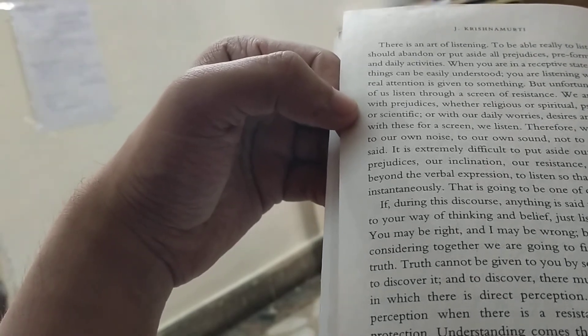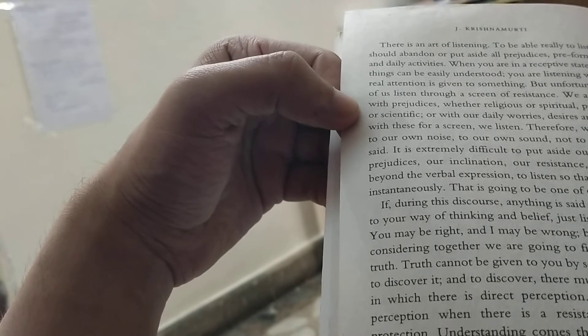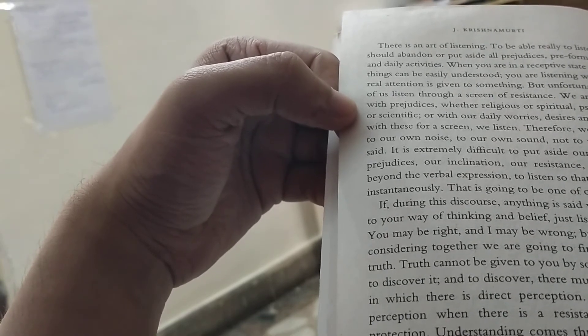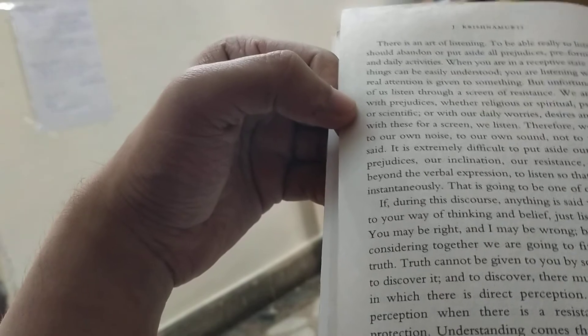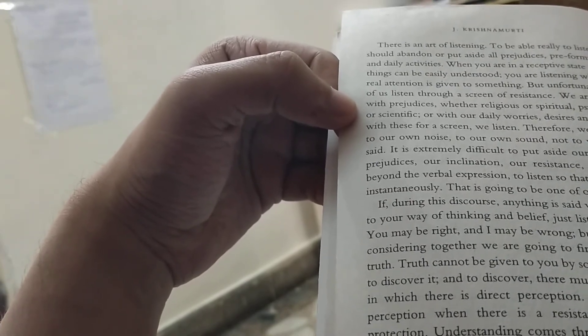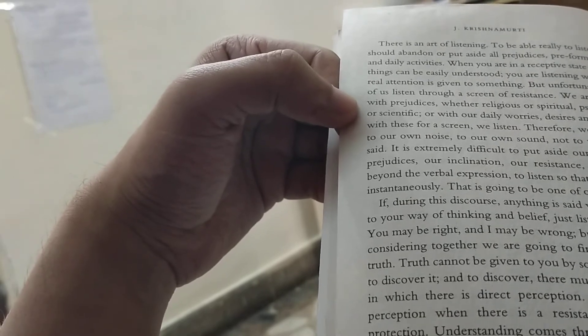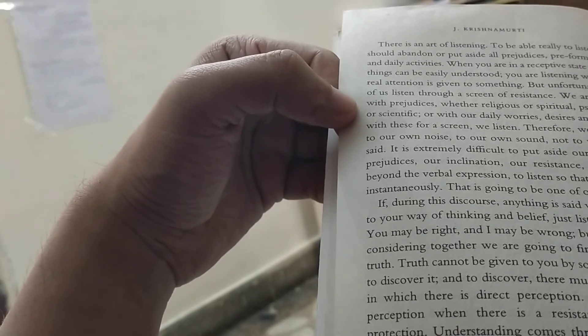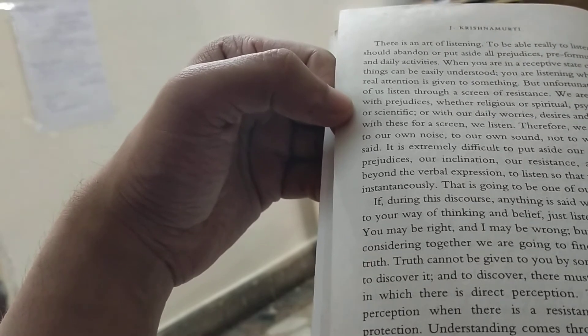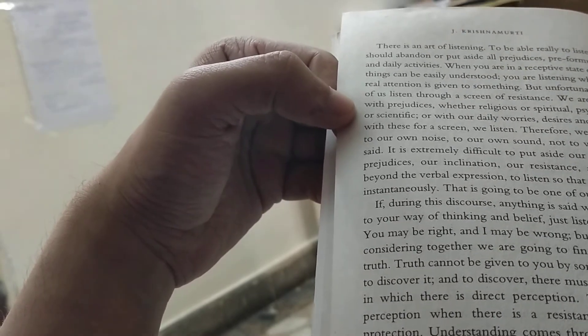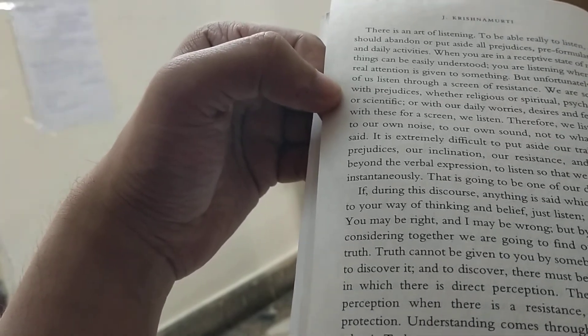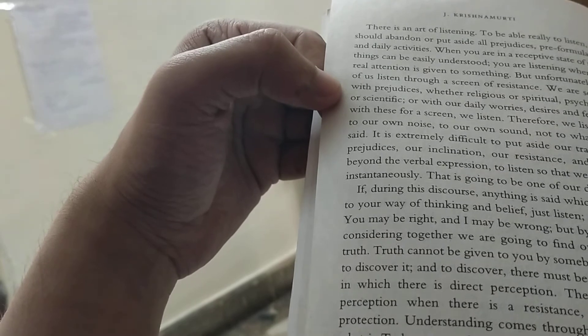Understanding comes through being aware of what is, to know exactly what is, the real, the actual, without interpreting it, without condemning or justifying it. This is surely the beginning of wisdom. It is only when we begin to interpret, to translate according to our conditioning, according to our prejudice, that we miss the truth. After all, it is like research. To know what something is, what it is exactly, requires research. You cannot translate it according to your moods.